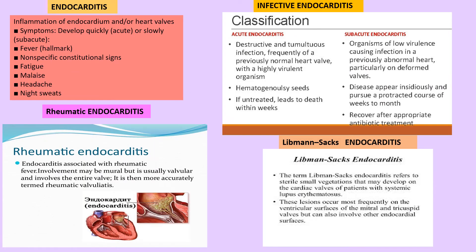Endocarditis is a very important exam topic — it is inflammation of the endocardium or heart wall, with features of fever, malaise, headache, and night sweats. There are three types: infective, rheumatic, and Libman-Sacks endocarditis. Infective endocarditis is divided into acute and subacute. In all types, the mitral valve is mostly involved; however, in IV drug abusers, even the tricuspid valve can be involved. Staphylococcus aureus mostly causes acute endocarditis affecting a normal heart, while Streptococcus viridans causes subacute endocarditis in patients with pre-existing valvular disease. Libman-Sacks endocarditis is mainly seen in lupus patients.